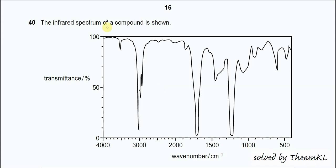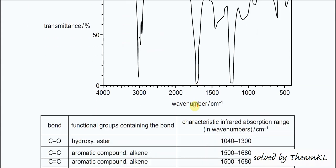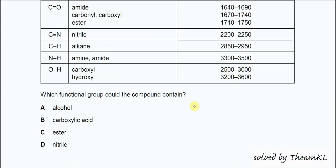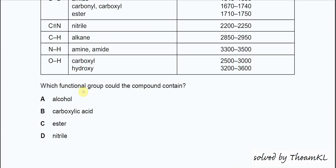Question 40. The infrared spectrum of a compound is shown. Let's look at the answer choices. Which functional group could the compound contain? The choices are: alcohol, carboxylic acid, ester, or nitrate.